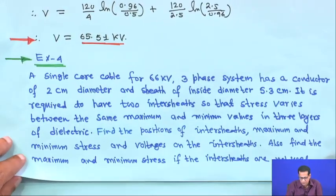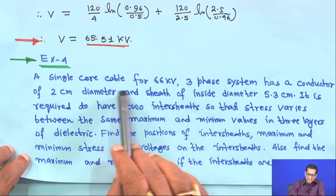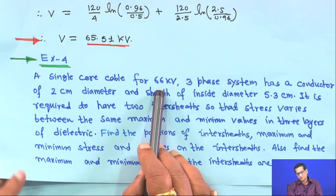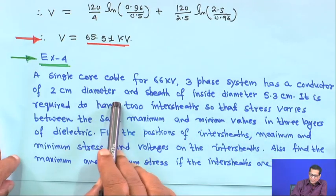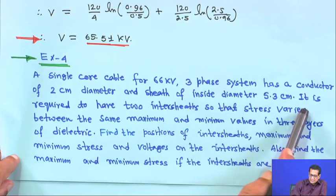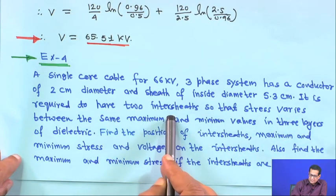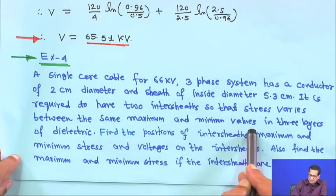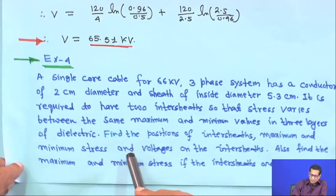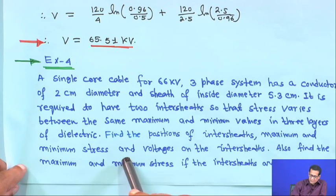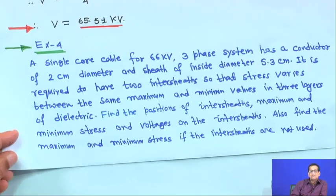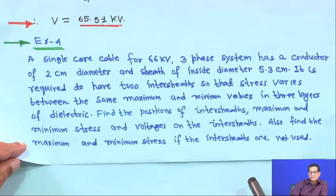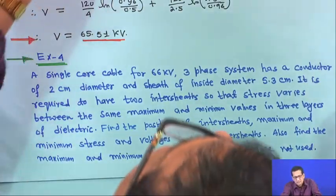Example 4: a single-core cable for a 66 kV three-phase system — when nothing else is mentioned, 66 kV is the line-to-line voltage. The conductor diameter is 2 centimeter and the sheath inside diameter is 5.3 centimeter. Two intersheaths are required such that the stress varies between the same maximum and minimum values in three layers of dielectric. Find the positions and voltages of the intersheaths, and also the maximum and minimum stress without intersheaths.